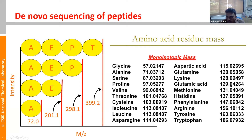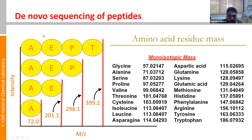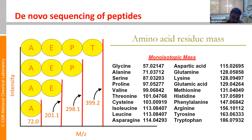So glutamic acid is 129. Now go to the next peak, which is 298. Subtract 201 from 298.1 — the difference is 98, which corresponds to probably 97 plus one protonation. Likewise, you can manually do de novo sequencing of a peptide this way.